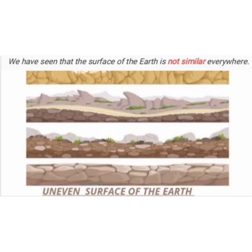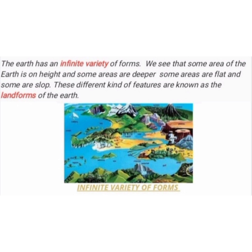We have seen that the surface of the earth is not similar everywhere. The earth has an infinite variety of forms. Some areas of the earth are at height and some are deeper. Some areas are flat and some are sloped. These different kinds of features are known as landforms of the earth. Now can you tell me why the surface of earth is not similar everywhere and why such features of the earth are created?